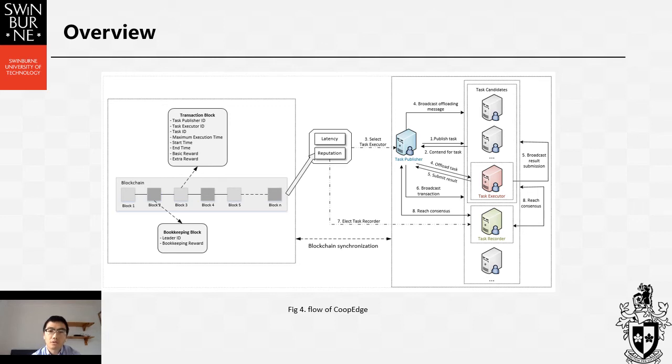The publisher selects the most reliable one based on latency and reputation to execute the task. The selected edge server becomes the executor. After that, the publisher broadcasts its decision and offloads the task to the executor.